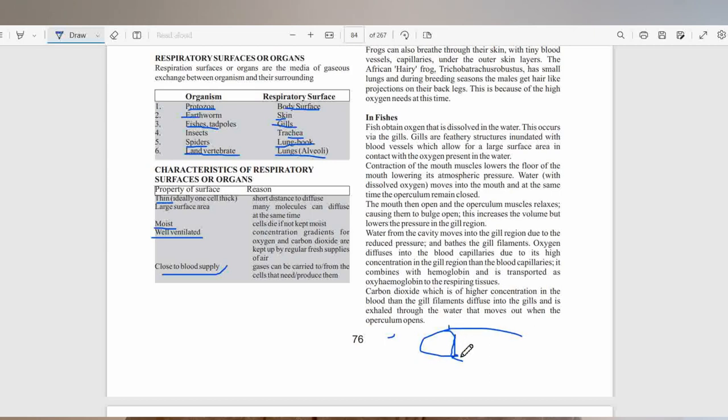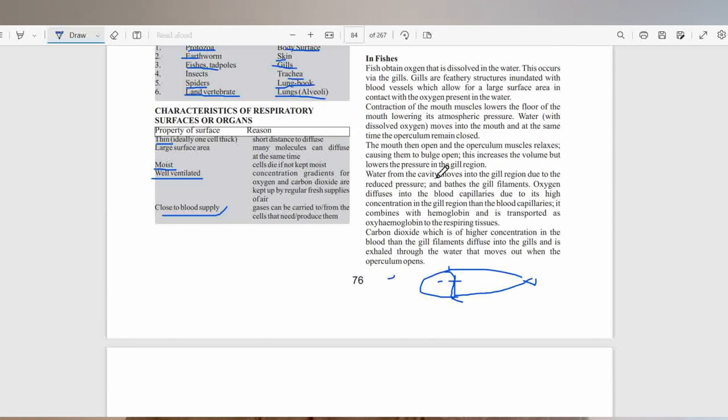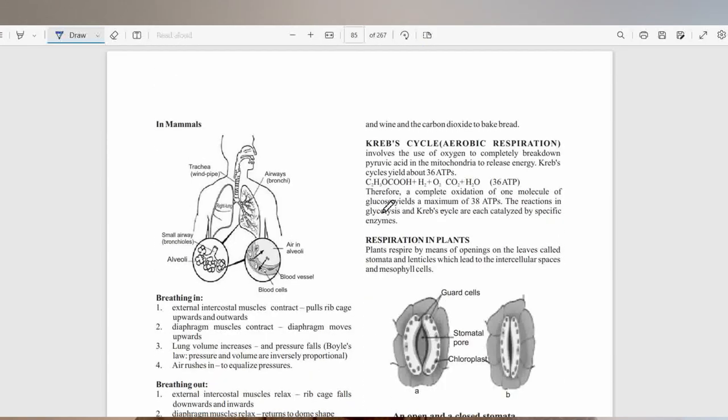The operculum allows water to move out in this direction. You should be able to explain the role that the operculum plays and also the gill filter that helps to filter out debris in the water. Then in mammals, we talked about the mechanism of breathing. This deserves some attention.